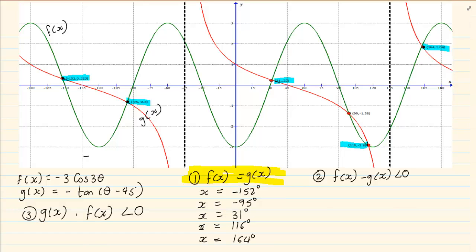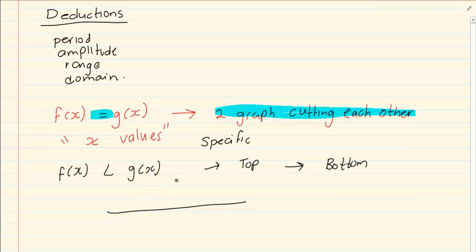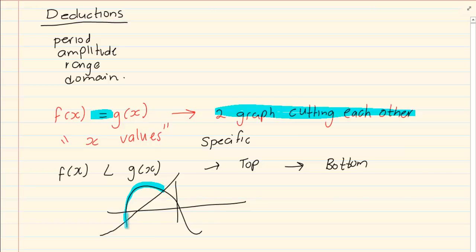Now look how they're going to change the question. They're asking you where f of x minus g of x is smaller than zero. It is easier to put one on one side and move the other to the other side. So what are they actually asking? They're asking you where f of x is smaller than g of x. When one value is smaller than the other, it means one graph is on top and one graph is at the bottom. But this is not at a specific point — this answer could run. Like if you were having a parabola, the parabola is on top from this point till this point. It's a range of answers. So when they give you an inequality sign, your answer is ranging, which means it becomes an inequality.